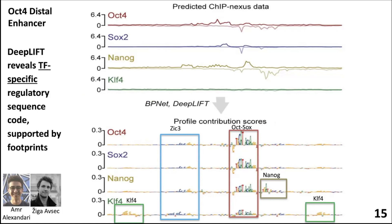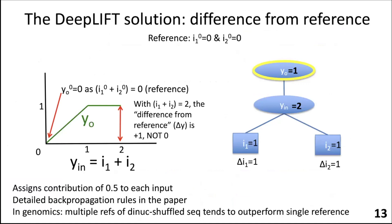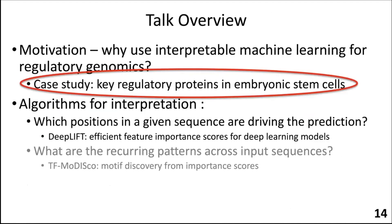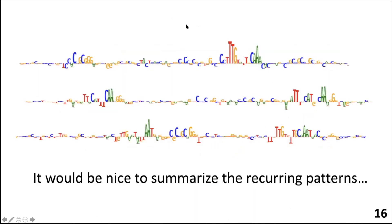In response to a question about a third irrelevant variable: if a third input had a weight of zero connecting it to the next neuron, DeepLIFT would notice that zero weight and would not propagate an importance signal through it. DeepLIFT uses not just the difference from reference but also the weight between neurons, so it is engineered to correctly assign zero importance to genuinely irrelevant inputs.